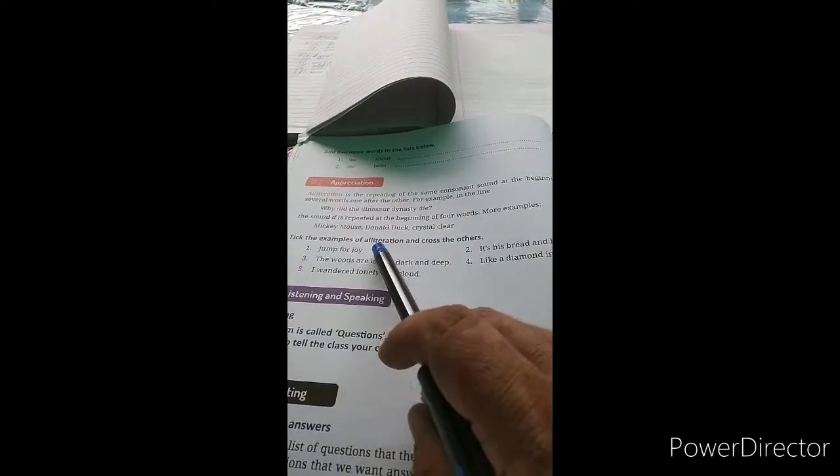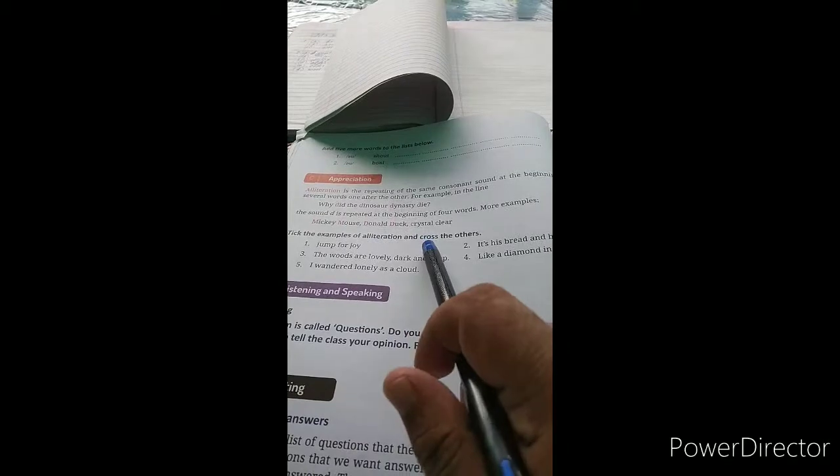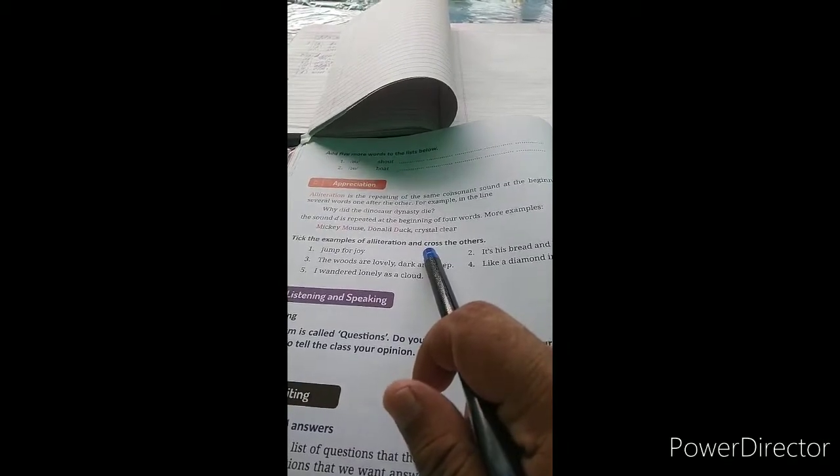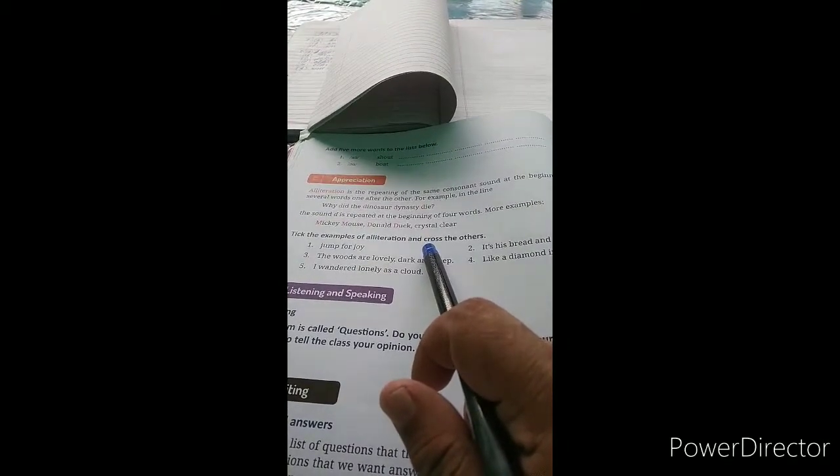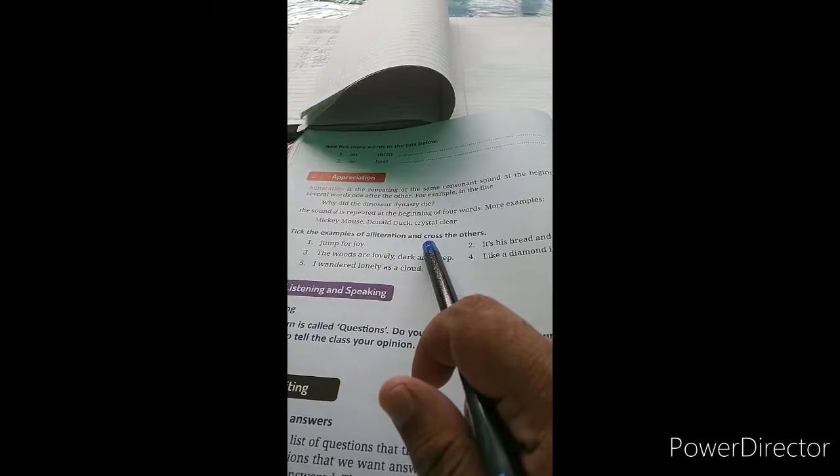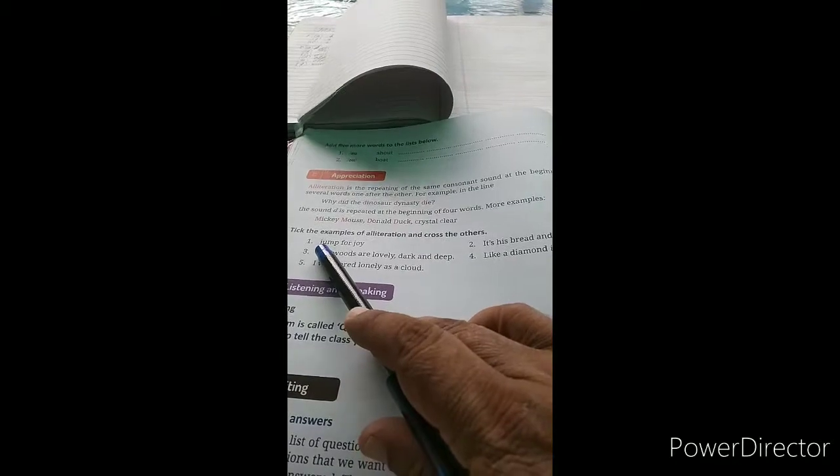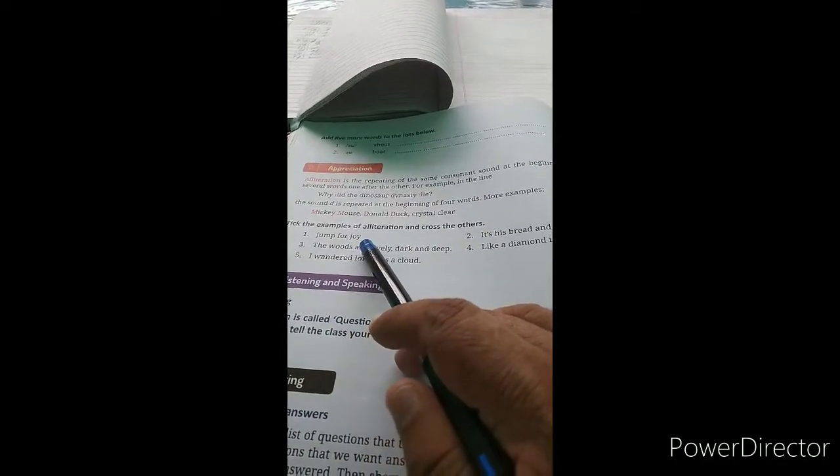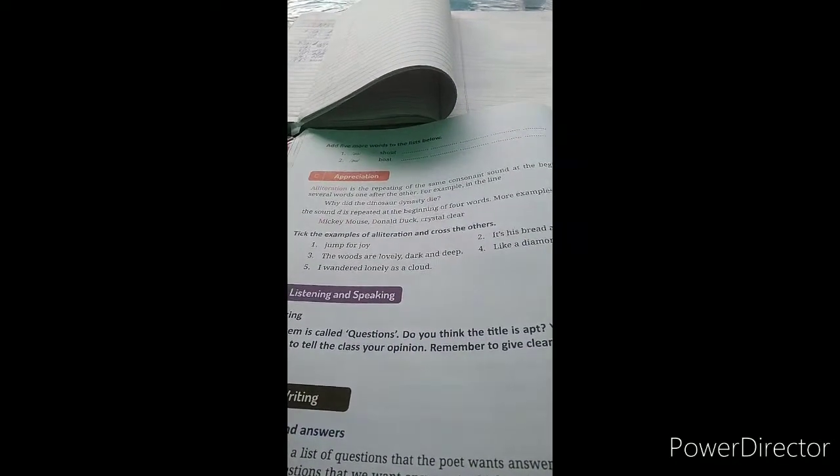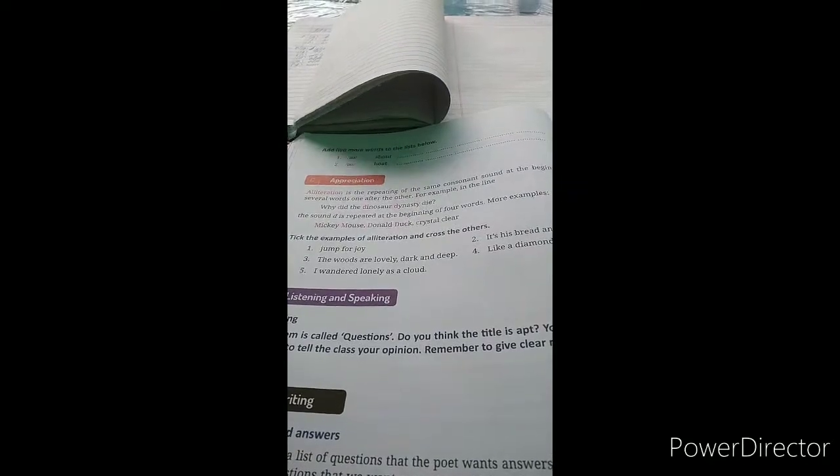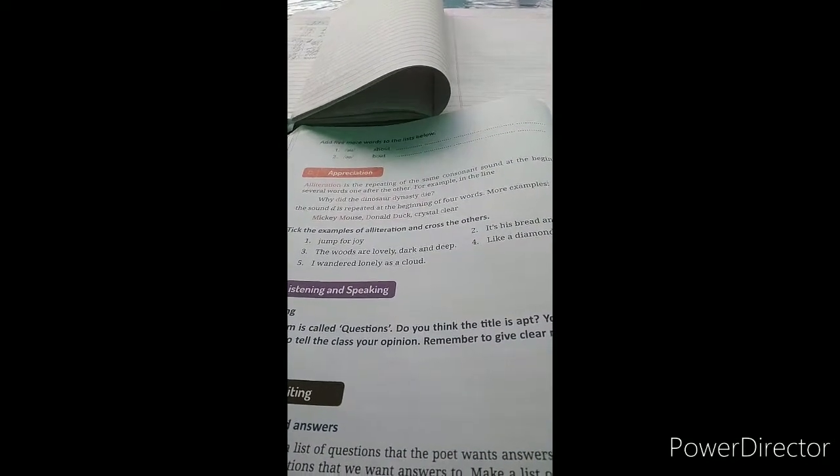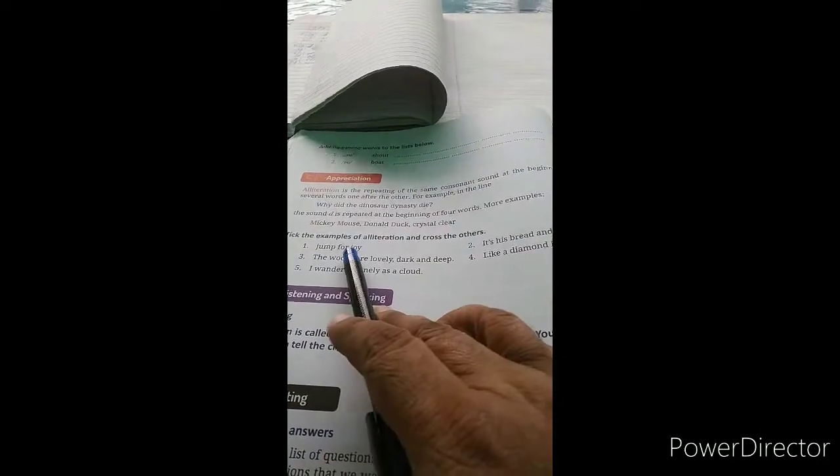Example one: 'jump for joy' - J is here and here, so this is alliteration. We will tick this. Example two: 'it's his bread and butter' - bread and butter both start with B, so this is alliteration. We will tick this.